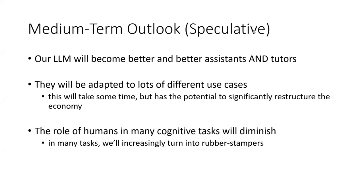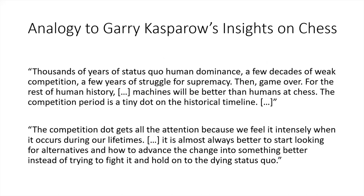We will increasingly turn into rubber stampers of what the models do and suggest. A good analogy is what Garry Kasparov described after being defeated by Deep Blue in 1997, when AI achieved supremacy in chess. He wrote: there were thousands of years of status quo human dominance, a few decades of weak competition, a few years of struggle for supremacy, then game over. For the rest of human history, machines will be better than humans at chess. The competition period is just a tiny dot in the historical timeline. Right now, as cognitive workers, we're in this competition period, but it's almost always better to start looking for alternatives and advancing change instead of fighting it.